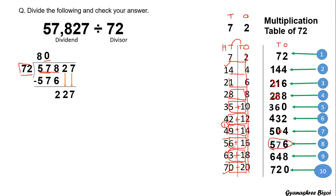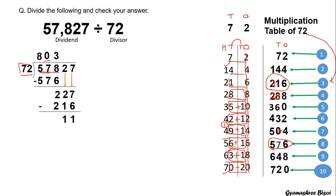Now I find a number in the multiplication table nearest to 227. That is 216 — 72 threes are 216. So I write 3 in the quotient. 72 times 3 equals 216. I put a subtraction sign and subtract, giving 11. Since 11 is less than 72 and there are no more digits in the dividend, we stop. The remainder is 11.